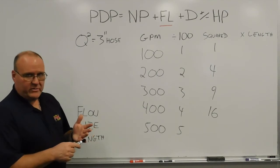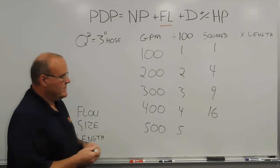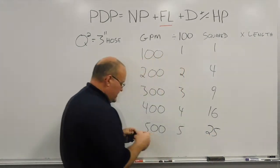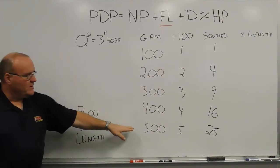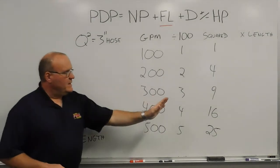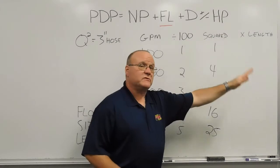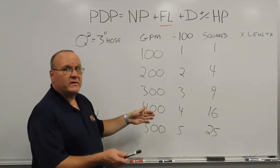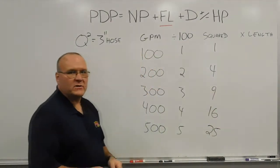And finally, 500 gallons a minute: 1, 2, 3, 4, 5 — knock off the zeros. 5 times 5 gives 25 pounds. At 100 feet of 3-inch hose flowing 500 gallons a minute, using the Q-squared method, there will be approximately 25 pounds of friction loss. From there, take this number and however many feet of hose there is, knock the zeros off that too — 500 feet of hose would be 5 — then multiply to get your total friction loss based on length.